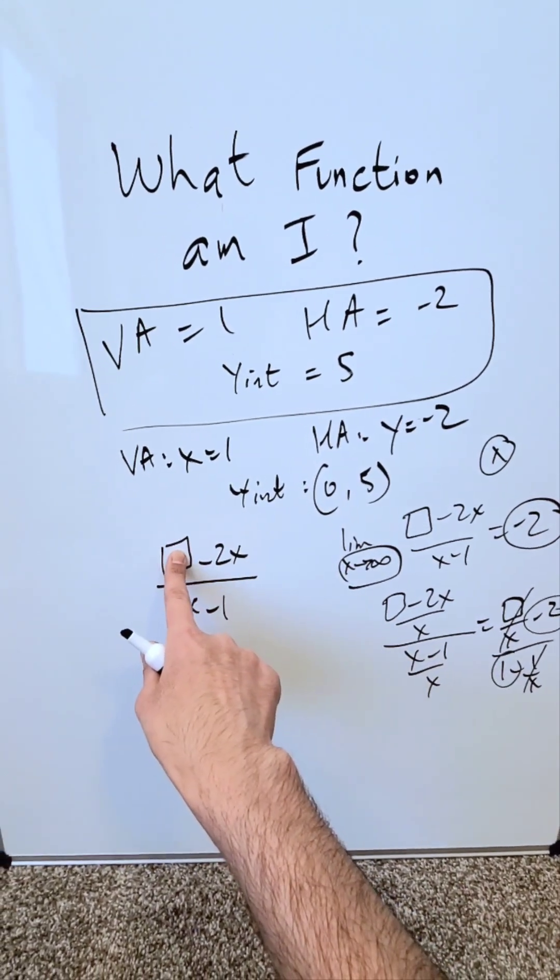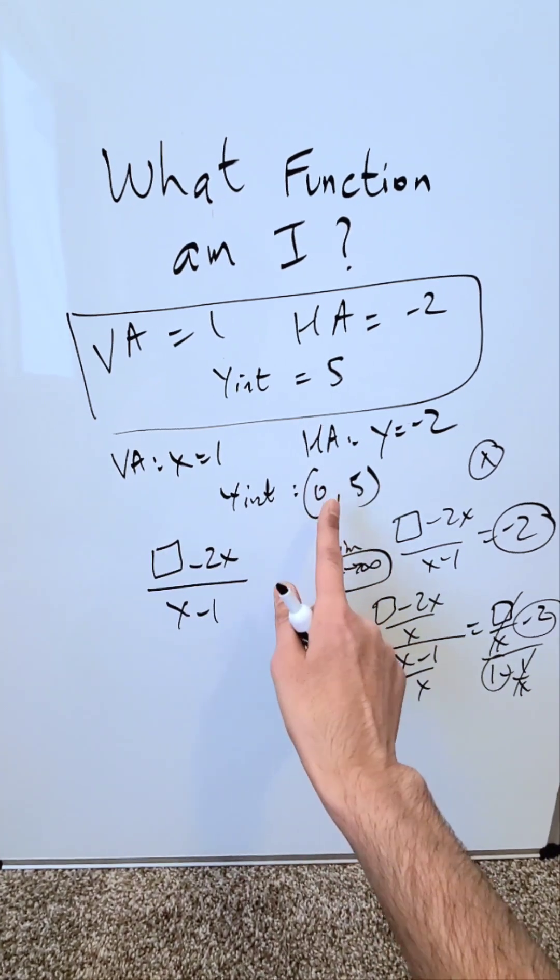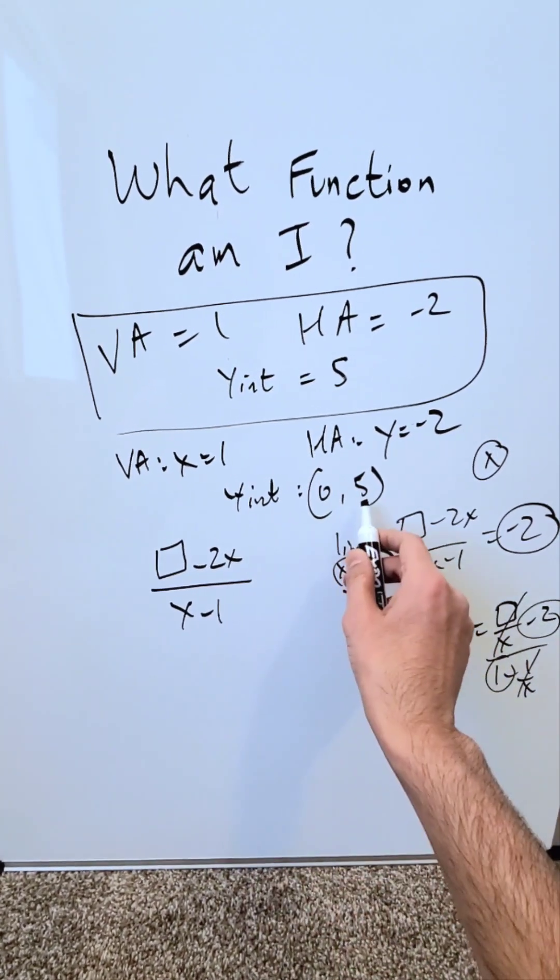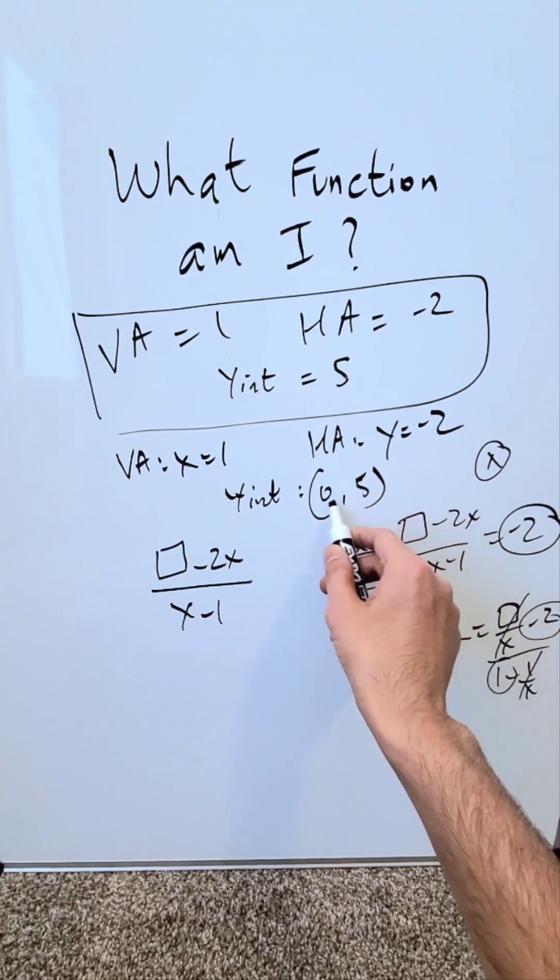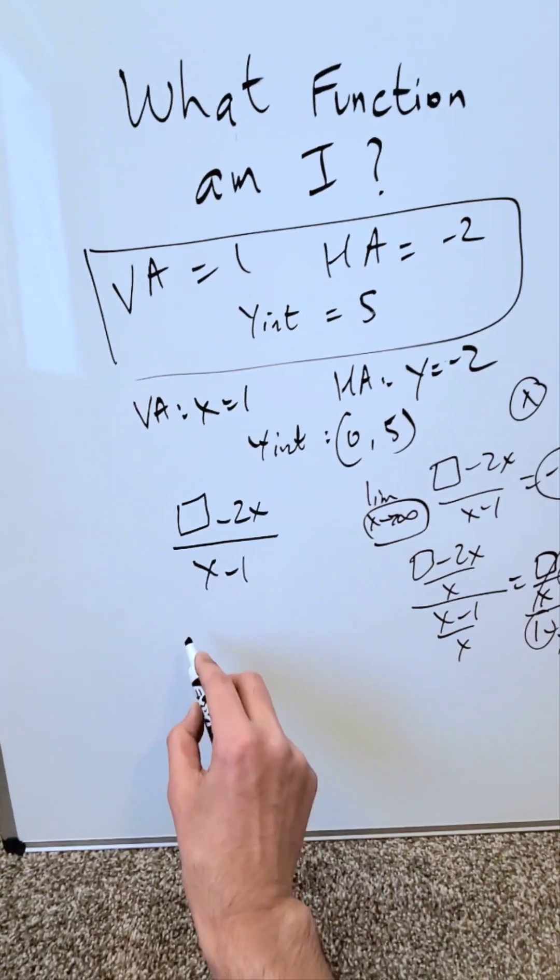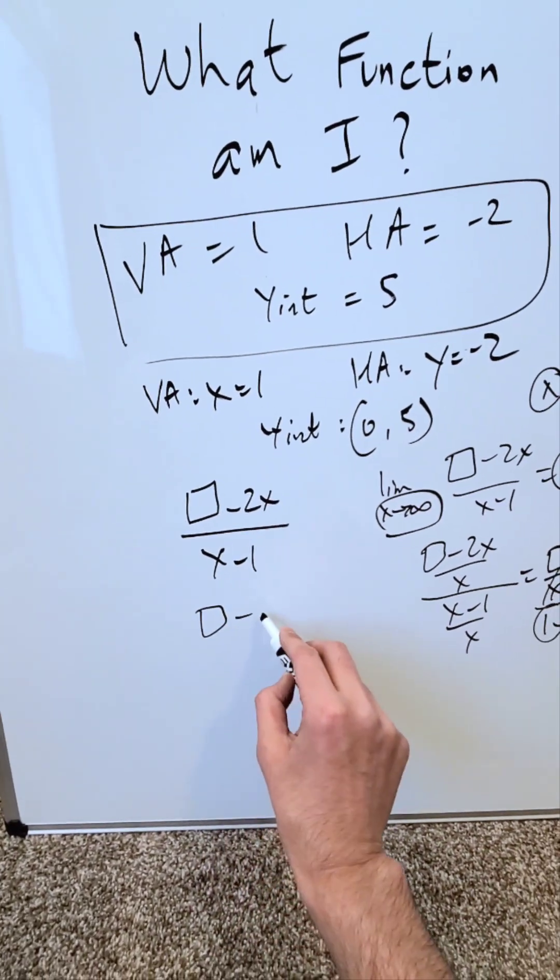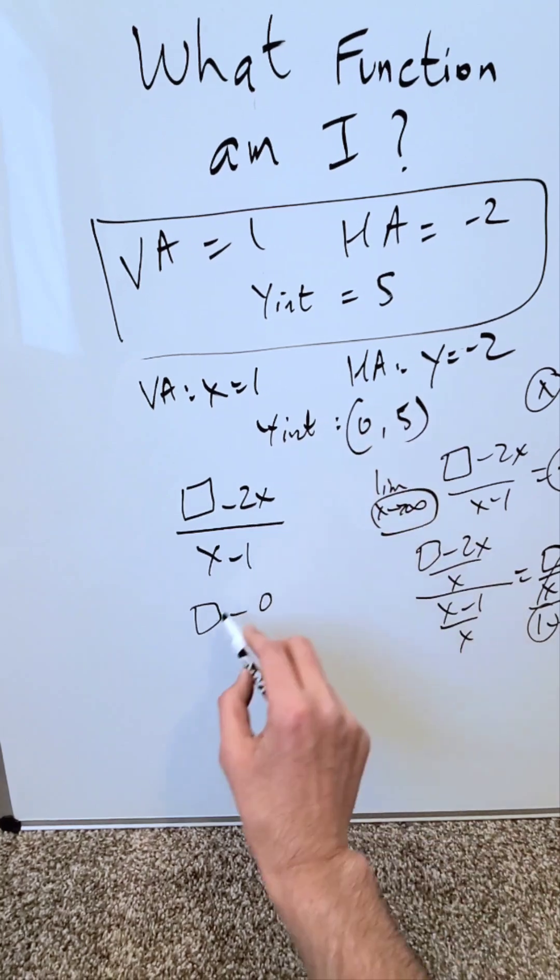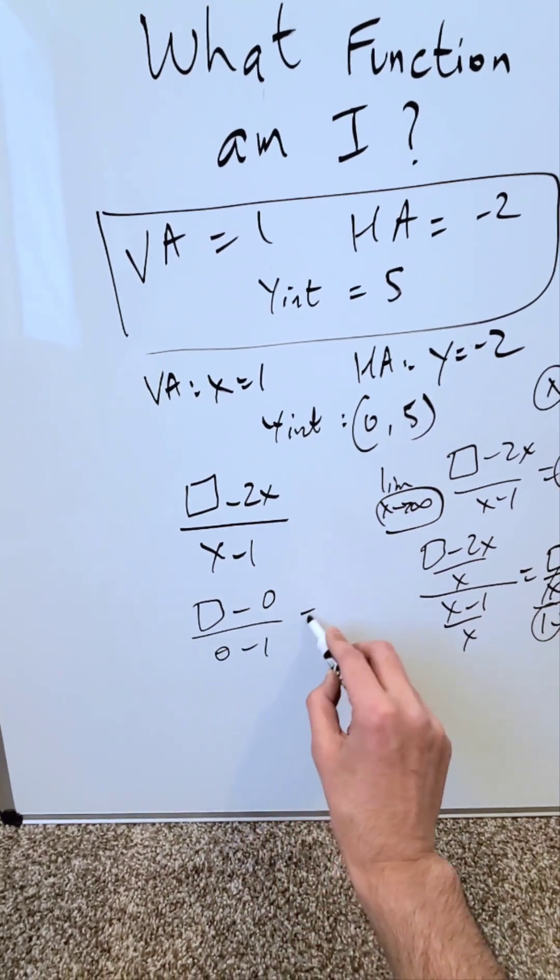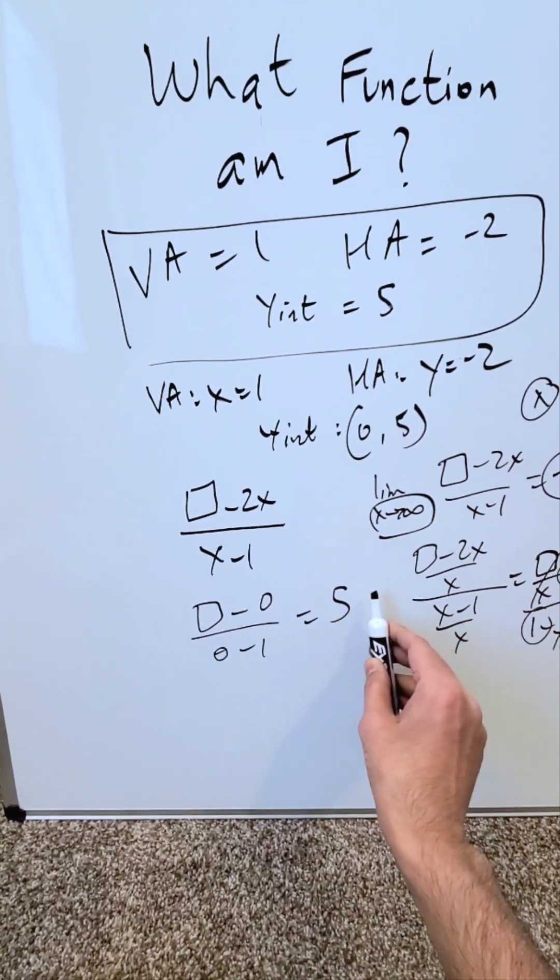I need to determine this and I can using my y-intercept value. At a given y-intercept value, I have an output y equal to 5 but an input x equals 0. Look, I have an unknown minus 0 because I'm putting zeros in places of x divided by 0 minus 1 is equal to an output 5. That would give me my y-intercept.